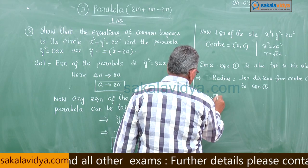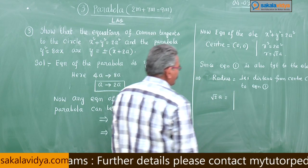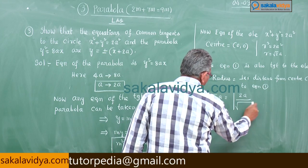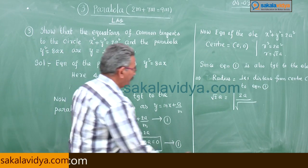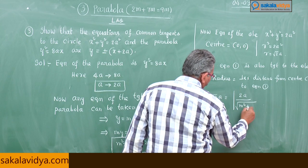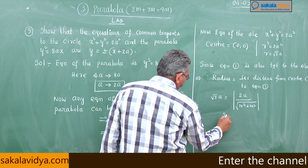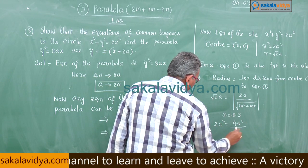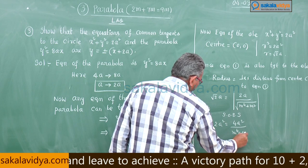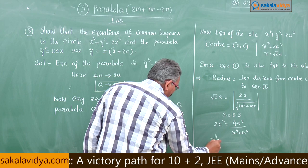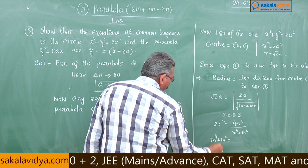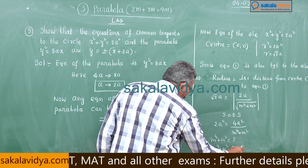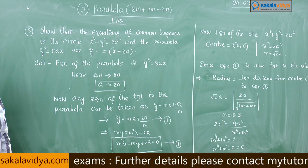Setting radius = perpendicular distance: the radius is √2·a. Applying the perpendicular distance formula from (0, 0) to the line m²x − my + 2a = 0 and equating to √2·a, then squaring both sides, we obtain a biquadratic equation in m.